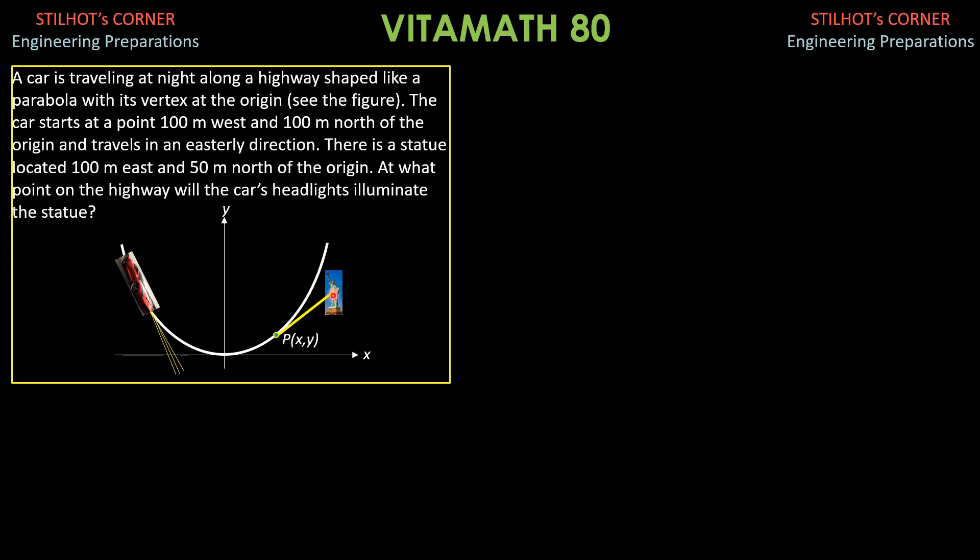The statue is located at 50 meters, 100 meters east, so that's 100 meters, 50 meters north. The coordinates of this, referred from the origin, is 100, 50, while the starting point of the car is at negative 100, 100 meters west, 100 meters north, so negative 100, 100 meters.